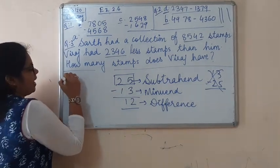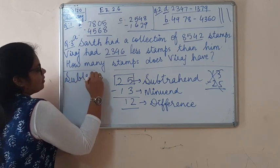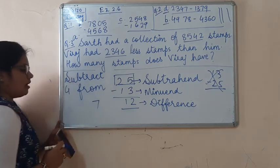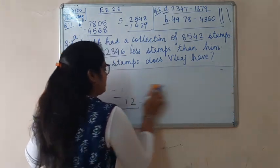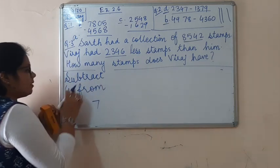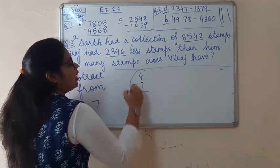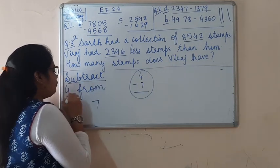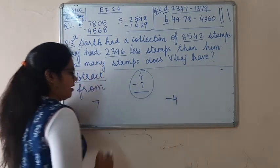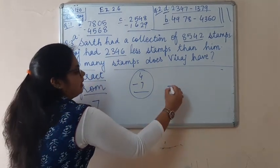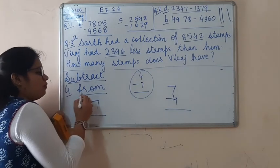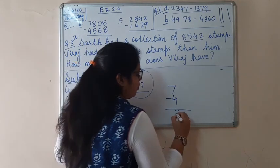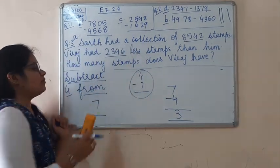Let's take an example. Suppose you are asked in a sentence: subtract 4 from 7. Many students make the mistake of writing 4 minus 7. The question says subtract 4, which means we have to subtract 4 — from what? From 7. So the 'from' number will be the one we subtract from, and the 'subtract' number will be the minuend. And the result is the difference. These were the terms of subtraction.